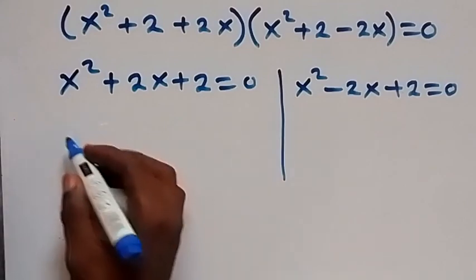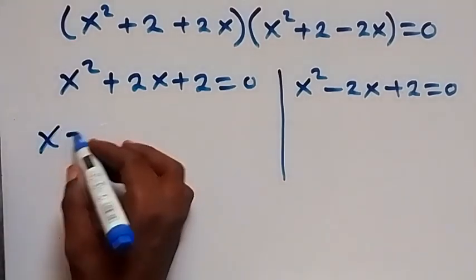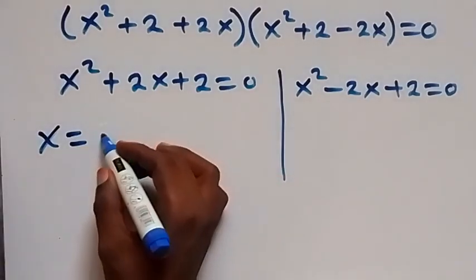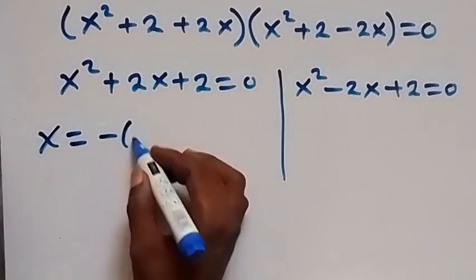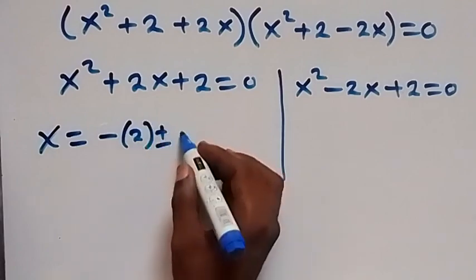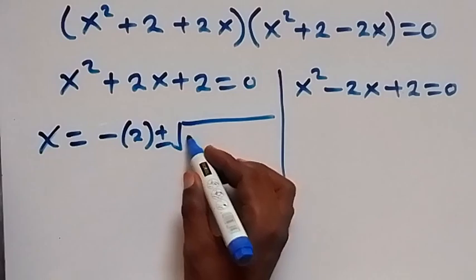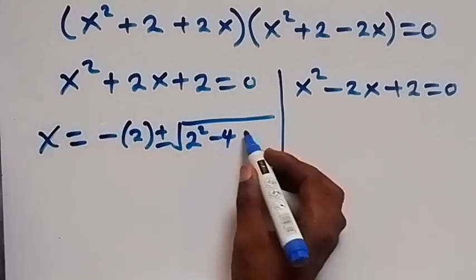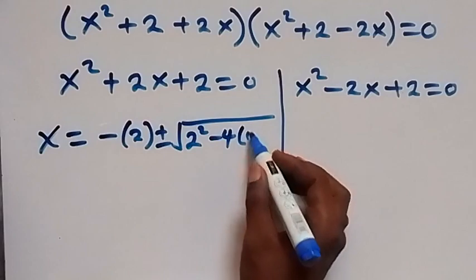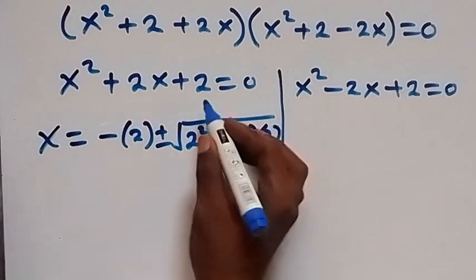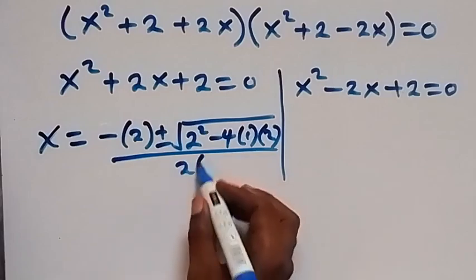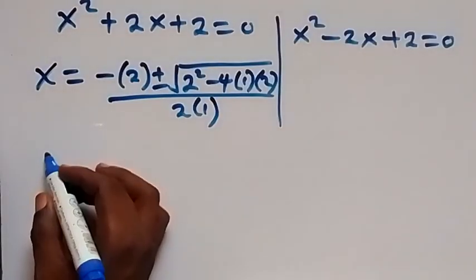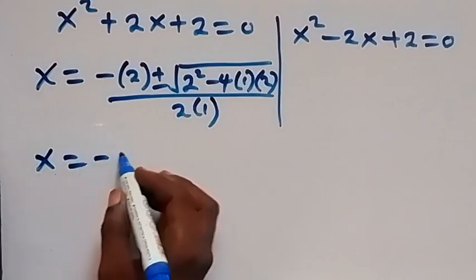Solving the first equation using the quadratic formula: x equals minus b — where b is 2, so minus 2 — plus or minus the square root of b², that is 2², minus 4·a·c where a = 1 and c = 2, all over 2a, which is 2.